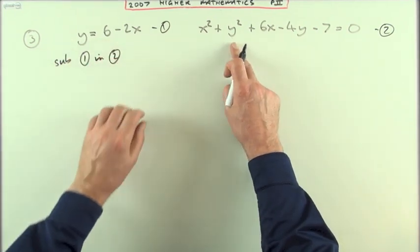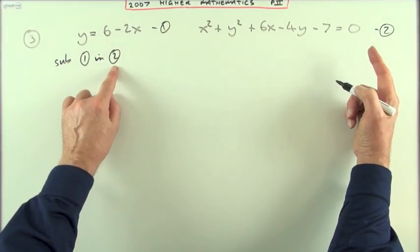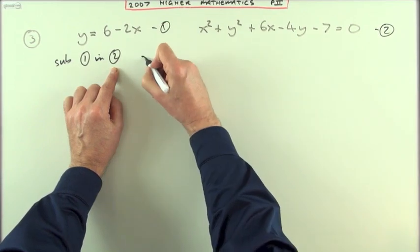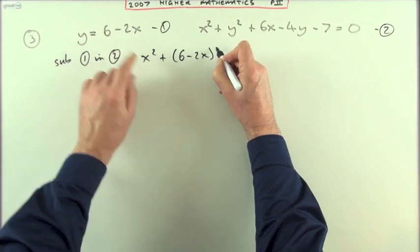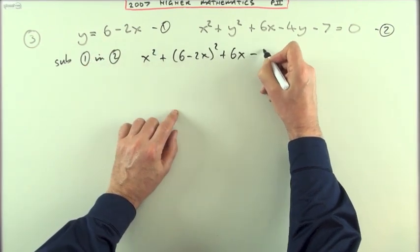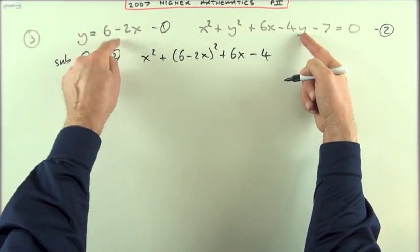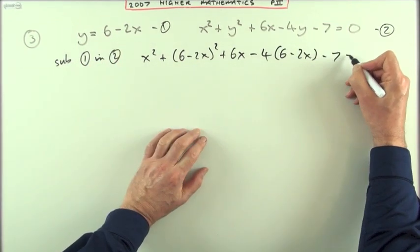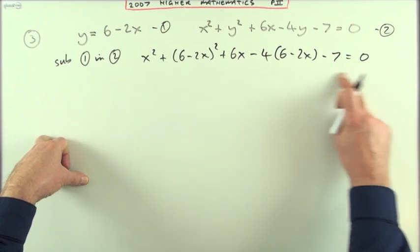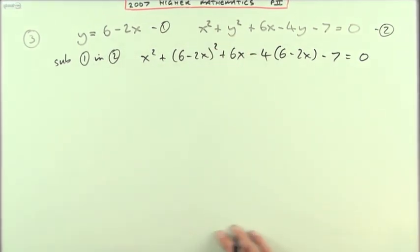I'm going to replace it with 6 minus 2x. So equation two would read x² plus, as soon as I come across y, I write 6 minus 2x squared, plus 6x minus 4 times 6 minus 2x minus 7 equals zero.